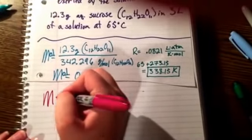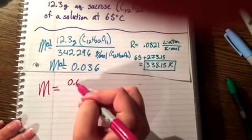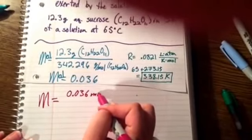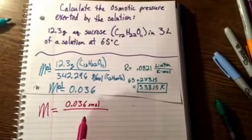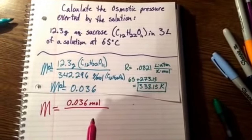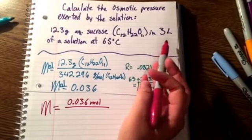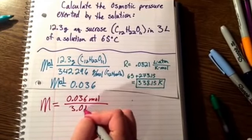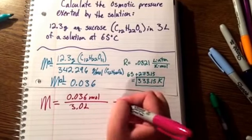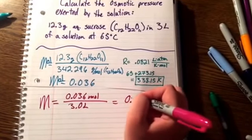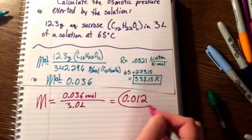So M equals our moles, 0.036 mole, over our solvent, which is 3 liters. When you divide that, you're going to get 0.012 for our molarity.